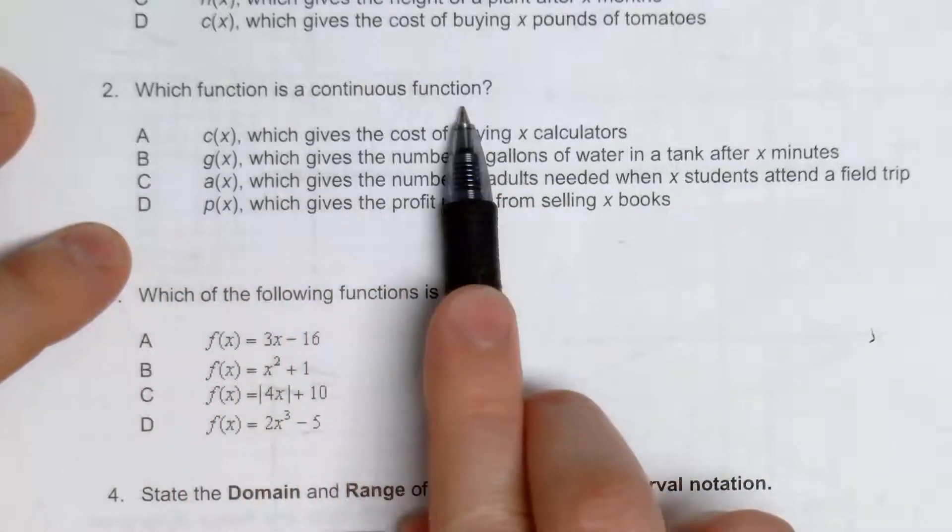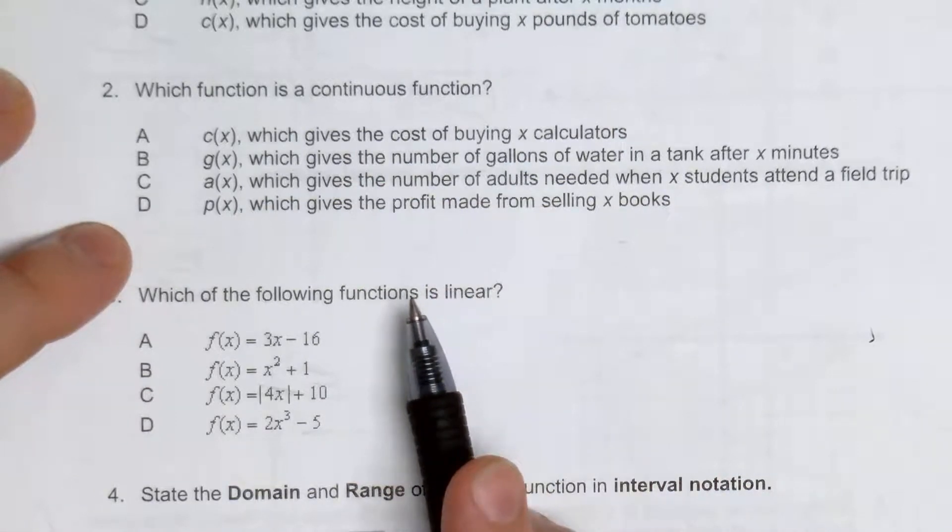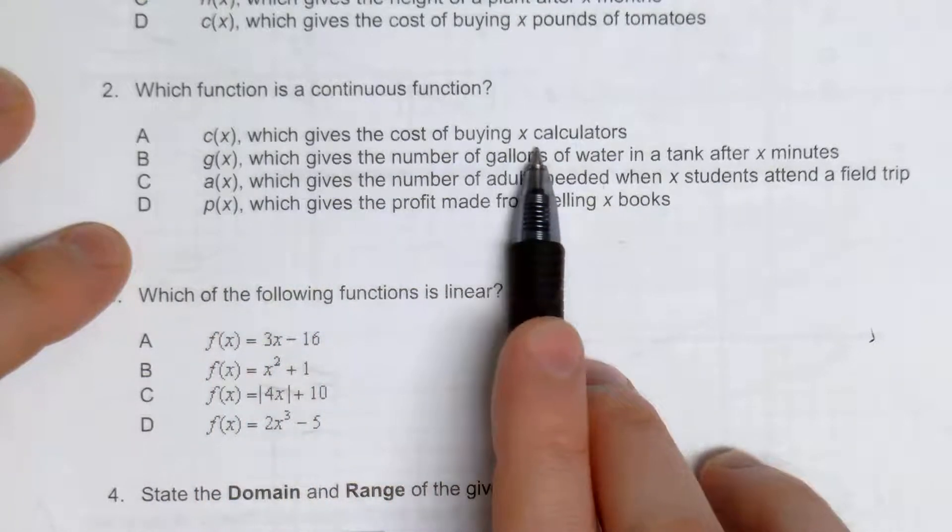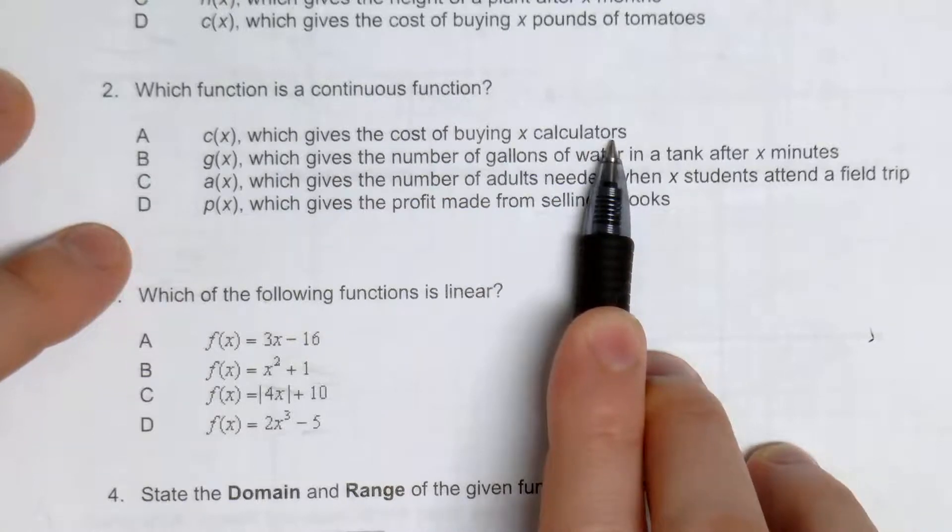Number two, which function is a continuous function? So a continuous function is rated by an interval. It's usually done by a straight line or a curve. So C of X, which gives the cost of buying X calculators, this looks like it's going to be discrete, so that's not going to be it.